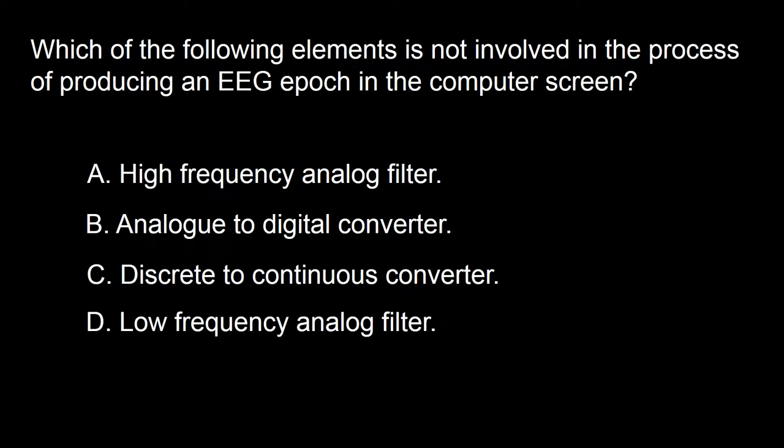Next question: which of the following elements is not involved in the process of producing an EEG epoch analog on the computer screen? A: high frequency analog filter, B: analog to digital converter, C: discrete to continuous converter, D: low frequency analog filter.